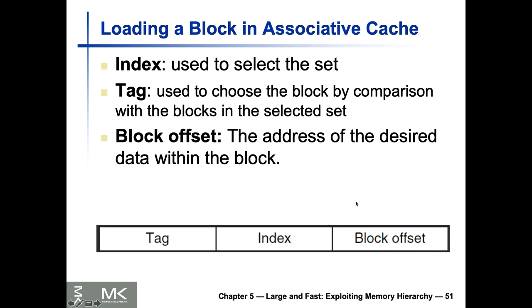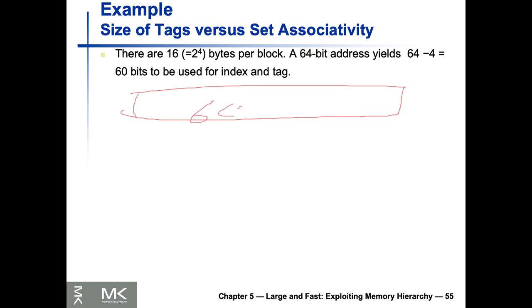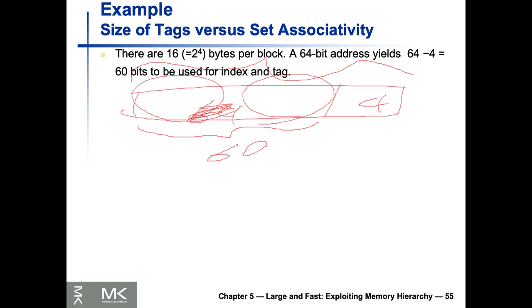We used the number of blocks and words per block to determine we need four bits for the block offset. That leaves 60 bits remaining out of the 64-bit address. Now we need to figure out the tag and index bits for each cache type.